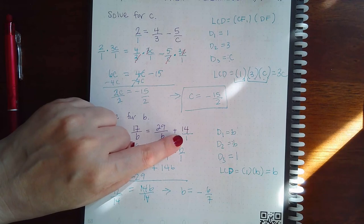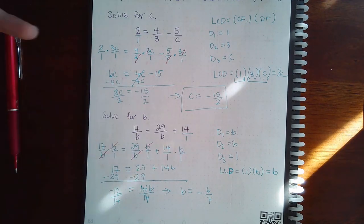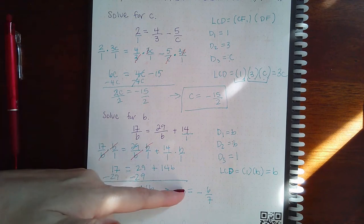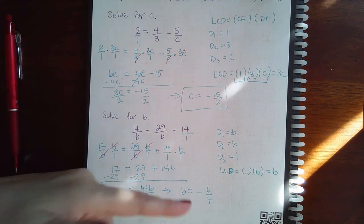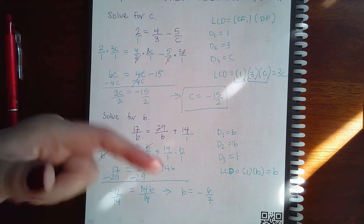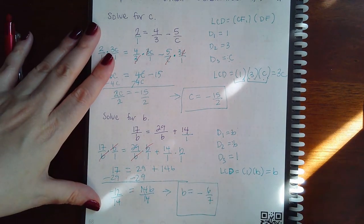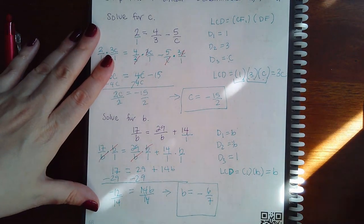As long as none of the denominators become 0 with this value, this is an actual solution. So, I can box it and type in my solution negative 6 over 7 in Alex.